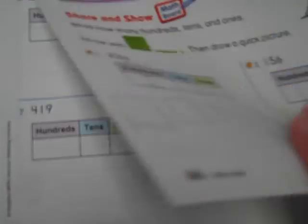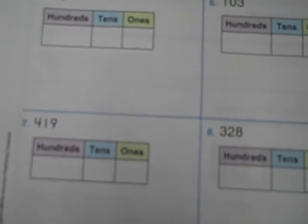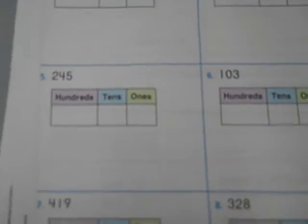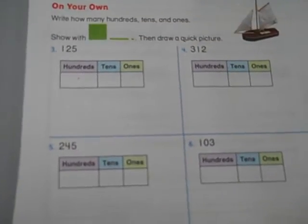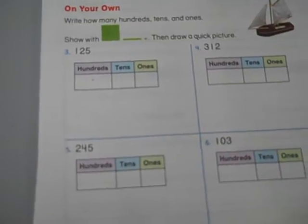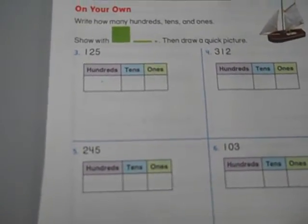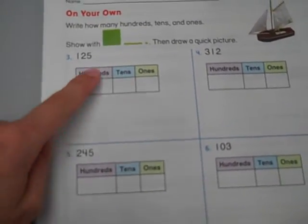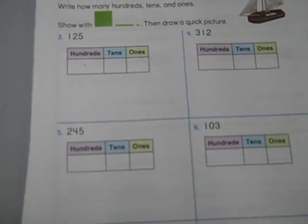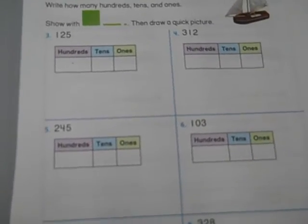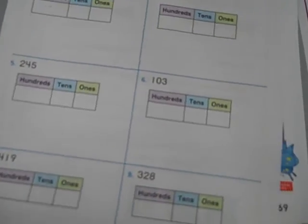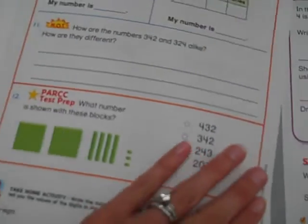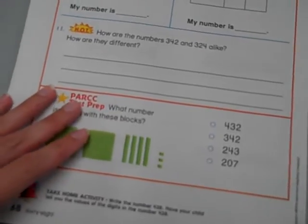When that's complete, turn to the next page, which is page 67. This is your child's chance to do it on their own. Again, if they're struggling, have them use colored pencils to complete. Red for hundreds, blue for tens, green for ones. Write the digits and draw the pictures for the entire page. You may pause the video at this time so you have time to complete page 67.